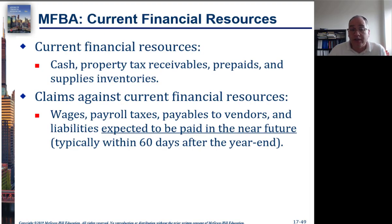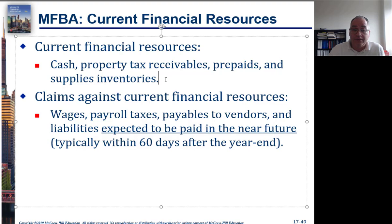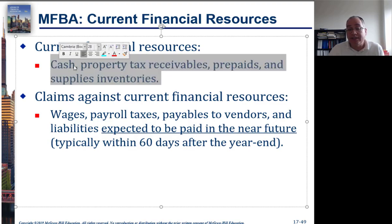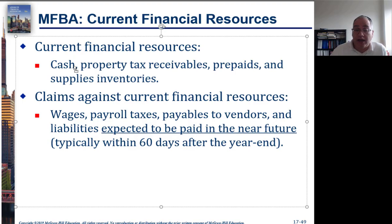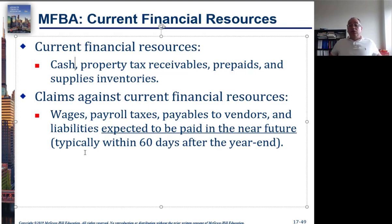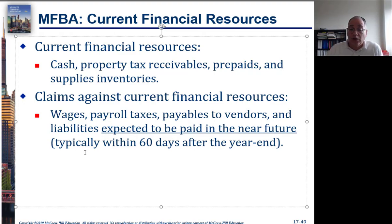The measurement focus and basis of accounting for current financial resources looks only at certain assets: cash, property taxes receivable, prepaid items, and supplies inventory. Liabilities include wages, payroll taxes payable, and liabilities expected to be paid in the near future. Importantly, we only record liabilities that are due this year or within 60 days after year end. This is a very different definition of assets and liabilities because we're only focused on current financial resources.